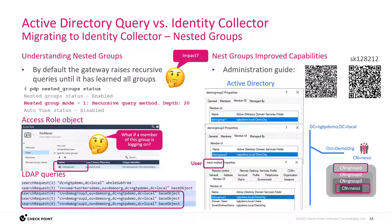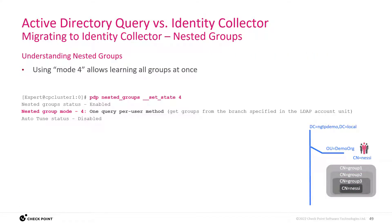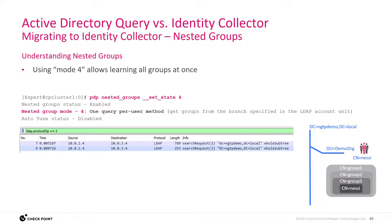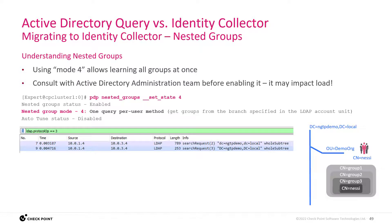Make yourself familiar with the relevant guides: the administration guide and the nested group improvement documented in SK128212. These improvements have been introduced in the latest releases. There is a setting called state 4, which allows you to retrieve all groups a user belongs to using one single query. However, it may impact the server depending on the login events and the complexity in your Active Directory. So again, listen to the Active Directory server's administrative team, and document and research before you start to integrate.